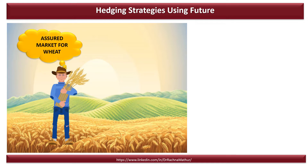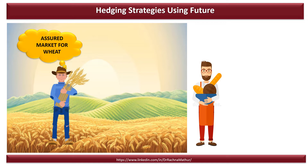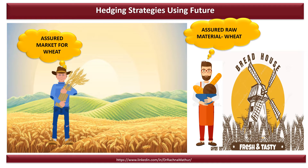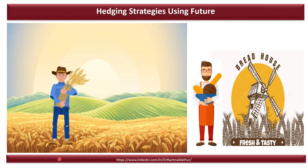Altogether, the main concern for Mr. John as a wheat farmer is an assured market for his wheat. Now on the other hand, this is Mr. Bob. He is the owner of the bread mill. The concern for Mr. Bob is to have assured raw material — that is, wheat — for the smooth production in his bread factory throughout the year. We can see that both the wheat farmer Mr. John and the bread mill owner Mr. Bob share the same concern: wheat.